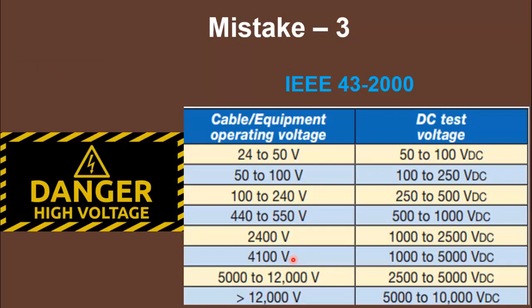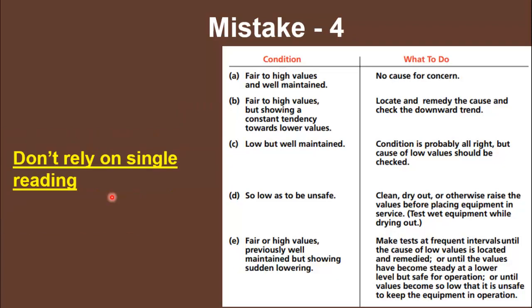The third mistake is applying the wrong test voltage. According to IEEE standard 43-2000, there is a list of test voltages to apply based on the equipment's rated operating voltage. For example, for equipment rated between 400 to 500 volts, the test voltage should be between 500 to 1000 volts. Please follow this chart to apply the correct test voltage, otherwise there is a danger of damaging the insulation of that equipment.